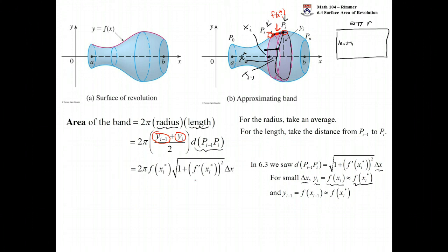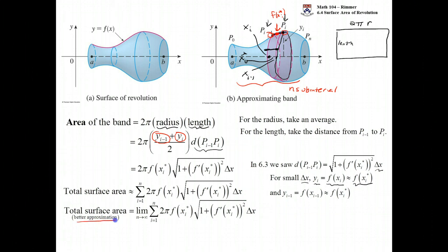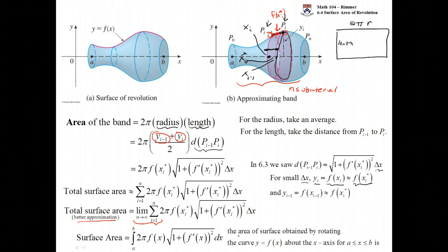To get the total surface area, we take the interval from a to b, chop it into n sub-intervals, and add up the band area for each one. With a finite number of sub-intervals it's an approximation, but to get a better approximation — and an exact answer — we let the number of sub-intervals go to infinity. Then Delta X goes toward zero and we have a Riemann sum, which becomes a definite integral. This is the formula for the surface area obtained by rotating the curve y = f(x) about the x-axis between a and b.